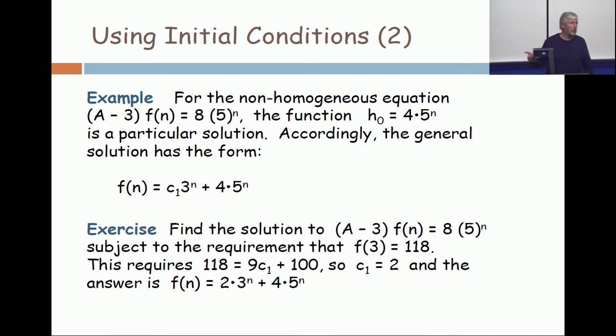So if you substitute in n equals 3 to that line, f(3) is supposed to be 118, then you're going to have c_1 times... Oh. It's subject to f(2) equals 118. So if you're making notes here, f(2). Actually, I started with 3, but the numbers were too big. So f(2) is 118.